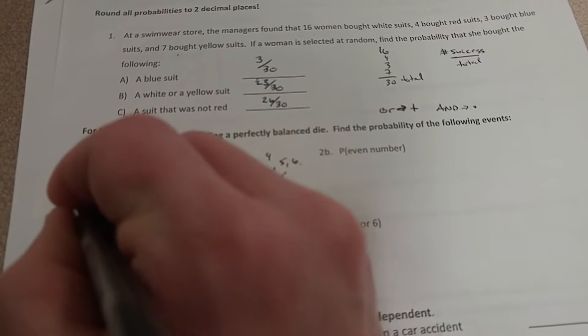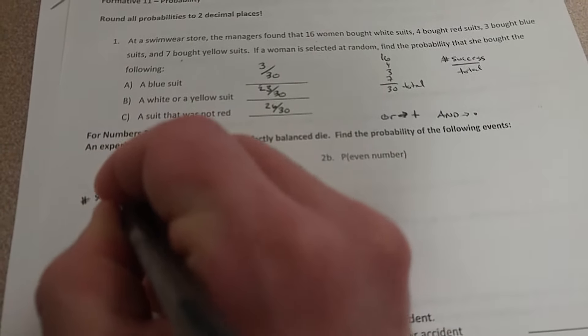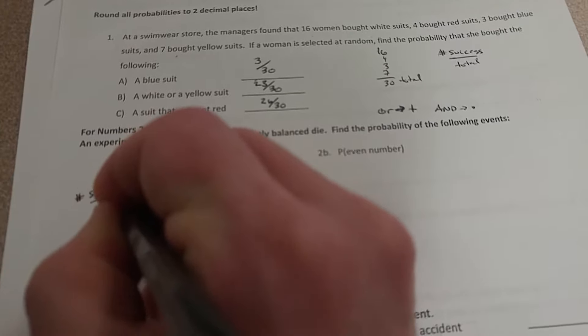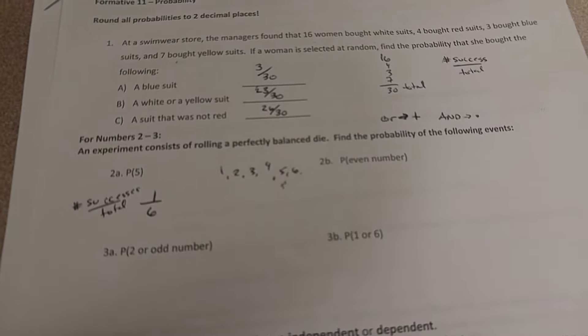Remember, we're doing the number of successes over the total. So when I'm on a die, the total is always going to be 6.